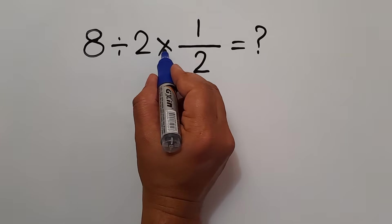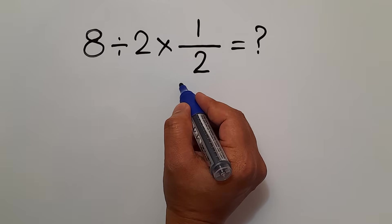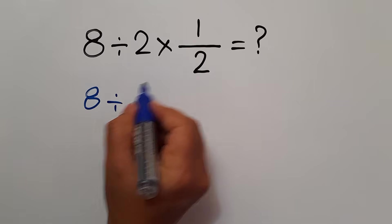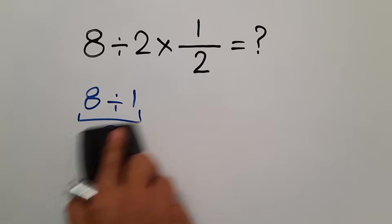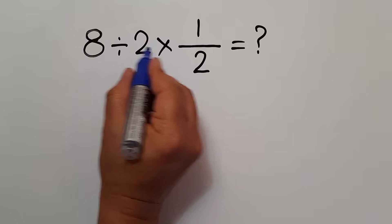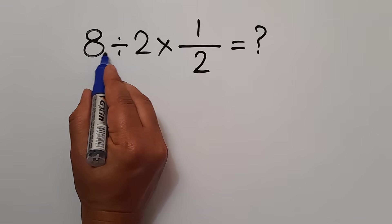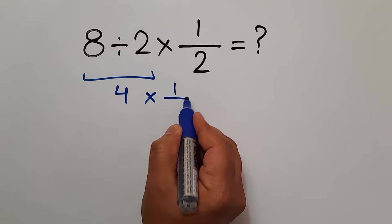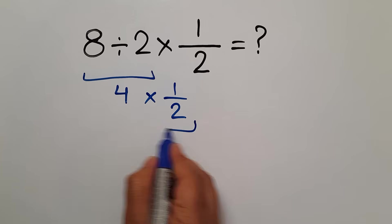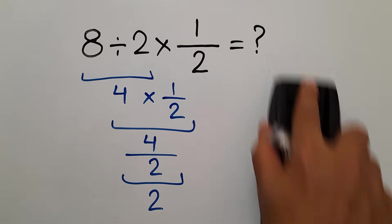8 divided by 2, then times 1 over 2. Are you ready to solve? Let's get started. One might cancel the 2s and say 8 divided by 1 equals 8 — but this answer is not correct. Because according to PEMDAS, multiplication and division have equal priority and we work from left to right. So first: 8 divided by 2 gives us 4, and 4 times 1 over 2 can be written as 4 over 2, which equals 2. Our final answer to this problem is 2.